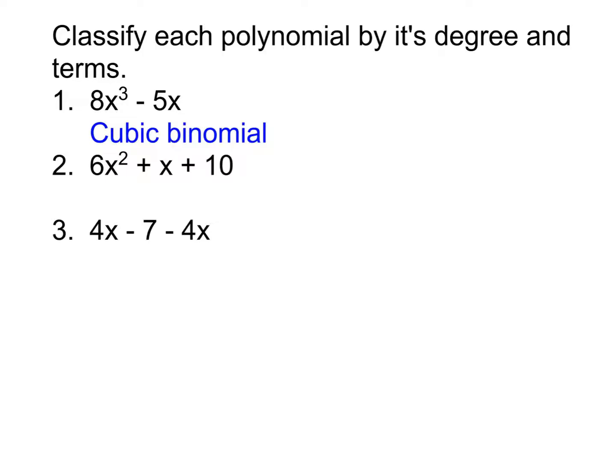We're going to approach the others the same way. We start by figuring out what's the degree. So in the case of number two, what is the degree of that polynomial? That means what is the highest exponent. In the case of number two, our highest exponent here is two. Typically, the highest exponent will be first, but that's not always the case, so you still need to check. So if it's degree two, what do we call it? Quadratic. And how many terms are there in number two? Three. Three terms. And if there's three terms, what do we call it? Trinomial. So number two is a quadratic trinomial.